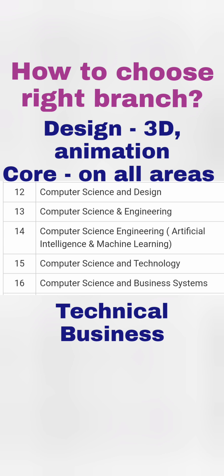Computer Science and Design is a design-focused branch that works on 2D/3D animation and uses computers to design things. You should choose it only if you have an interest in drawing and want to get into animation and 3D design. CSC Core is the number one branch, gets filled quickly, and covers all areas of computer-related subjects.